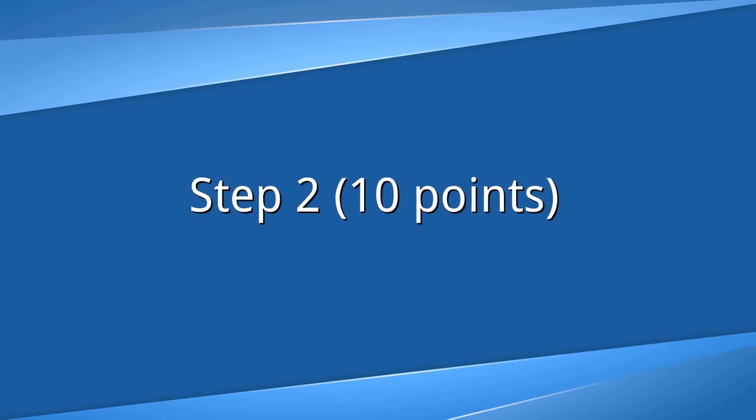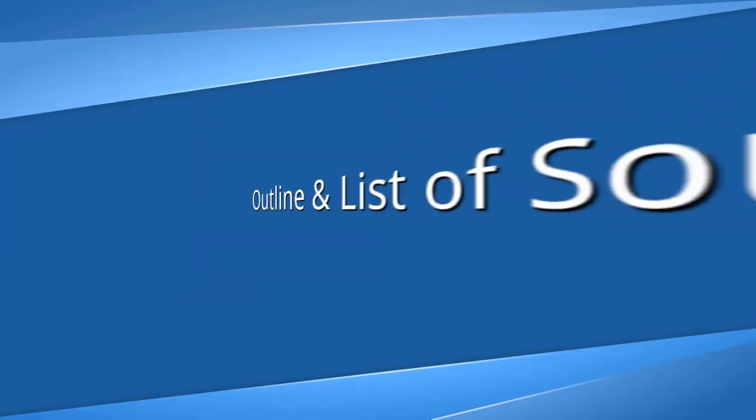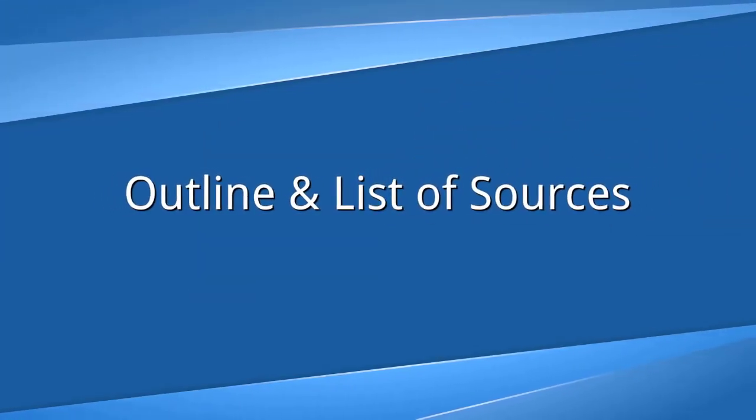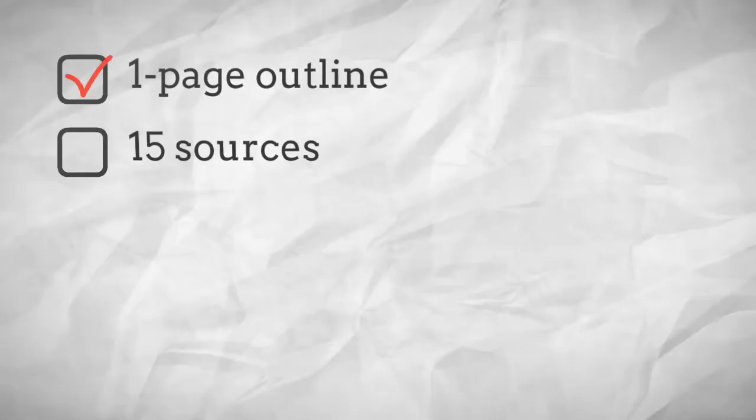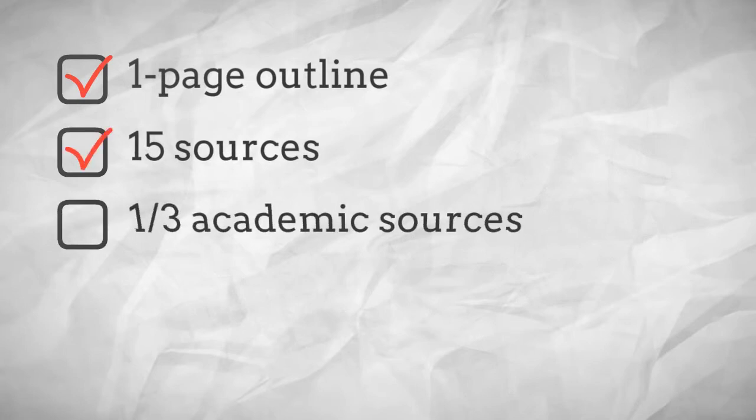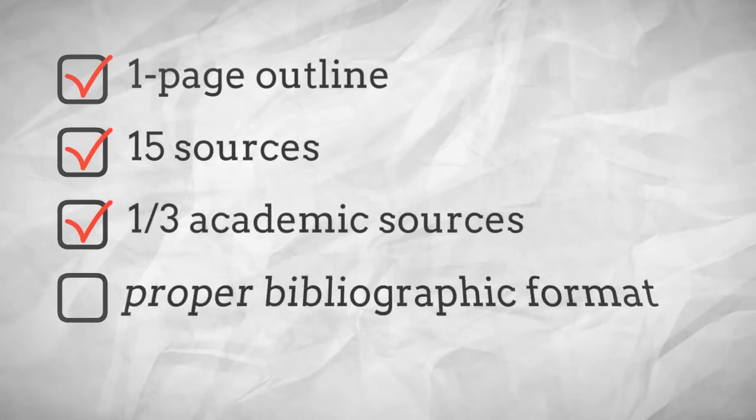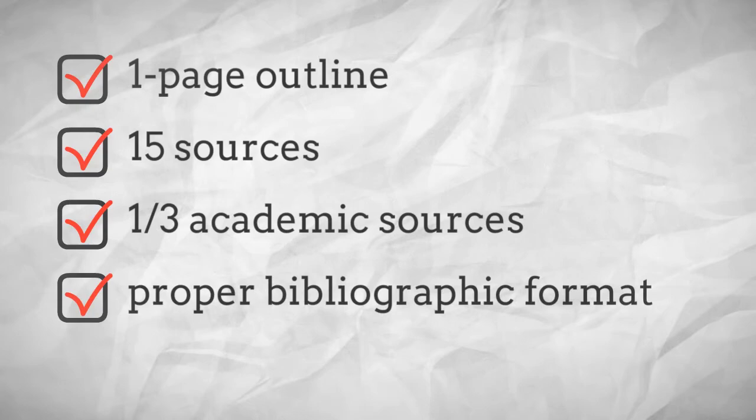The second step, which is worth 10 points, is an outline and list of sources. This should include a one-page outline of your paper, along with 15 sources that you might use, at least one-third of which should be academic. You should also use proper bibliographic format.